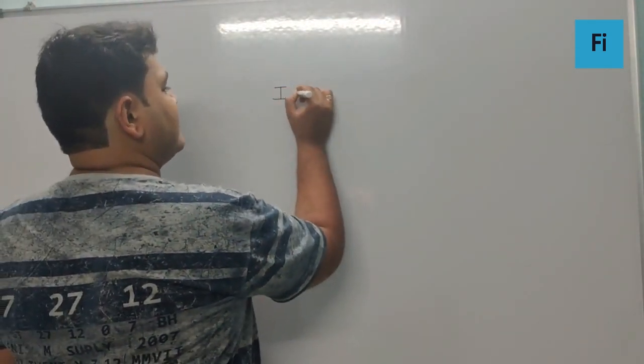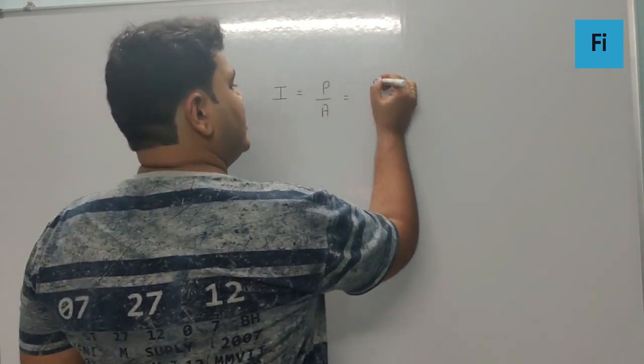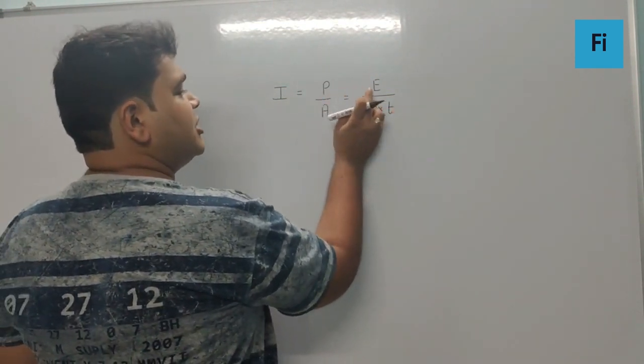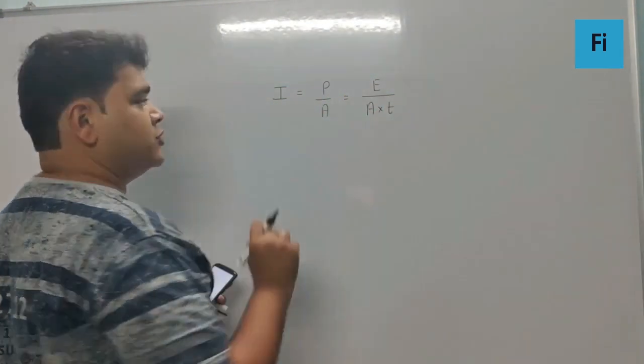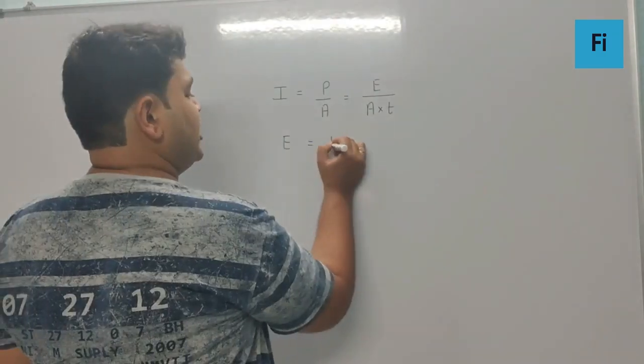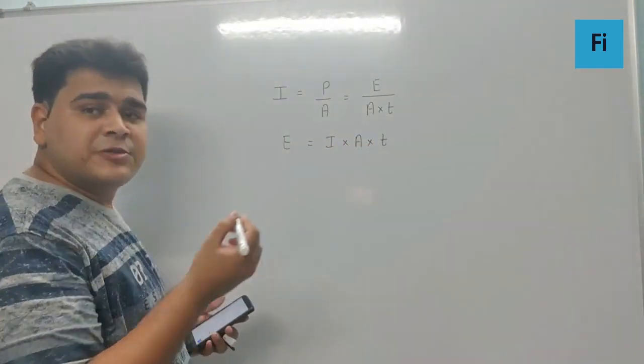We can say the intensity is power upon area, whereas power is energy upon time. So energy upon time and area, we get this formula, and that means the energy is going to be intensity into area into time.